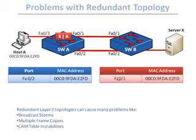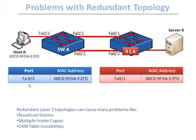When the packets are received by switch A from port F01, it looks at F02 in its MAC address table and sends the packet there, which inevitably loops back through switch B — causing a loop and ultimately preventing the packet from ever reaching its destination, host A.